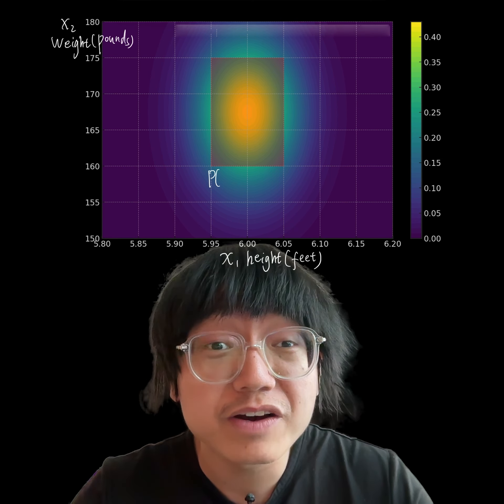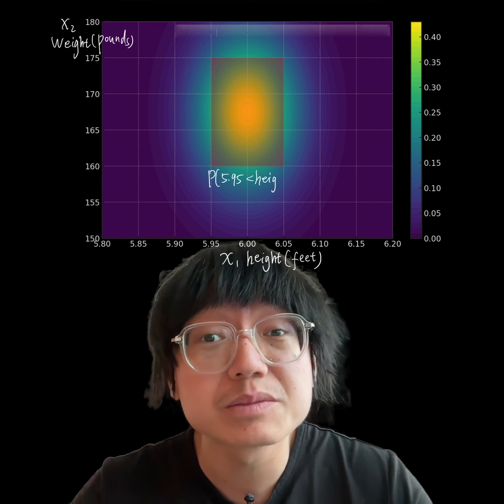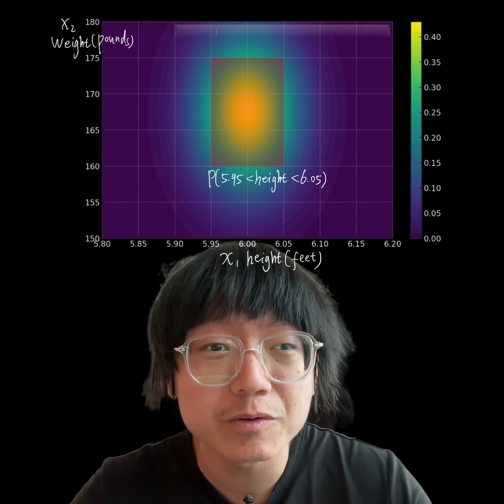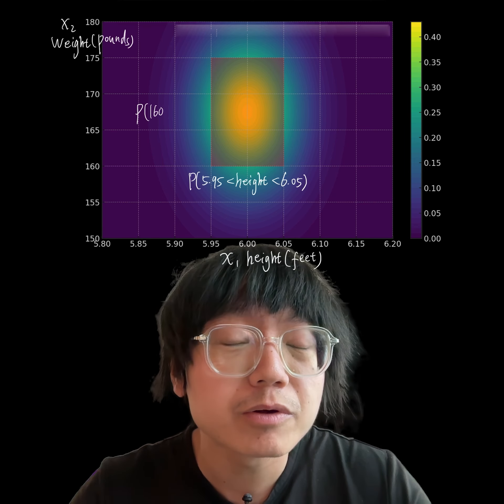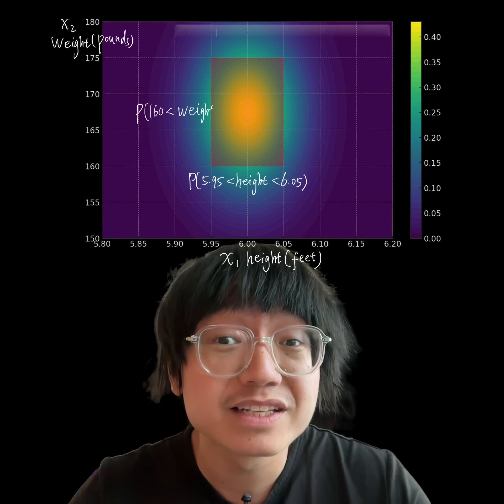To find the joint probability over specified ranges for both variables, we can integrate the function first over one variable, and then integrate over another variable.